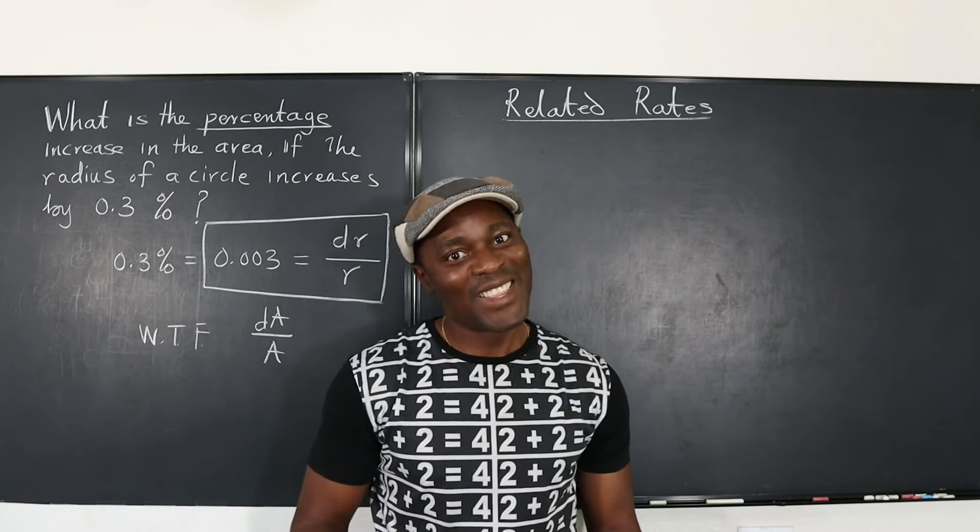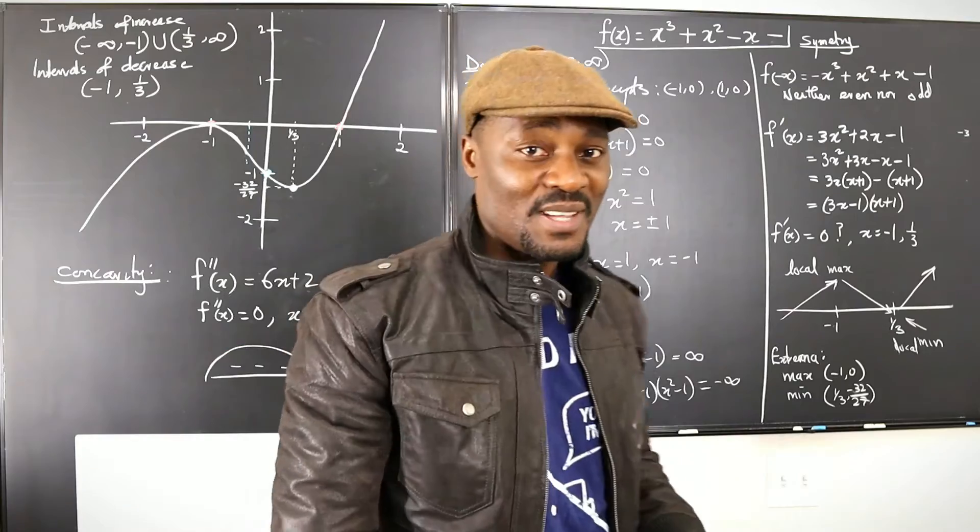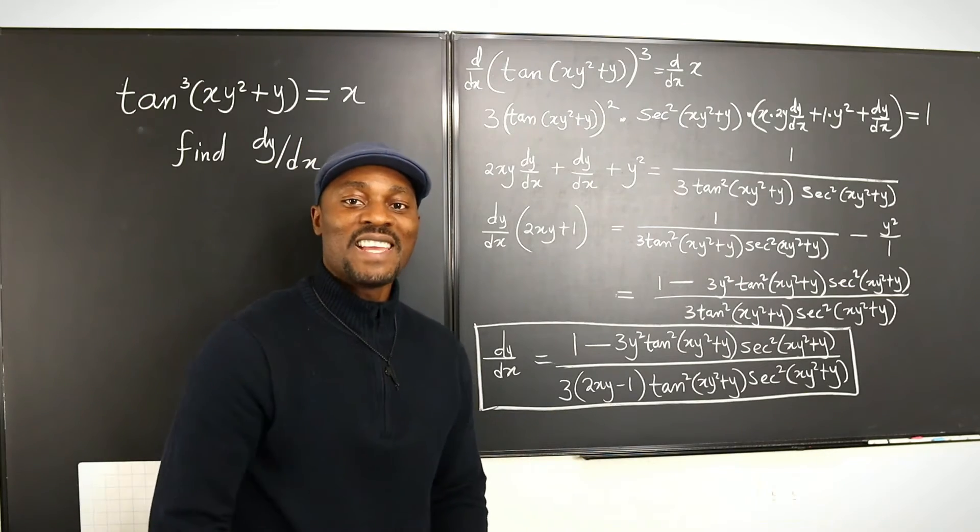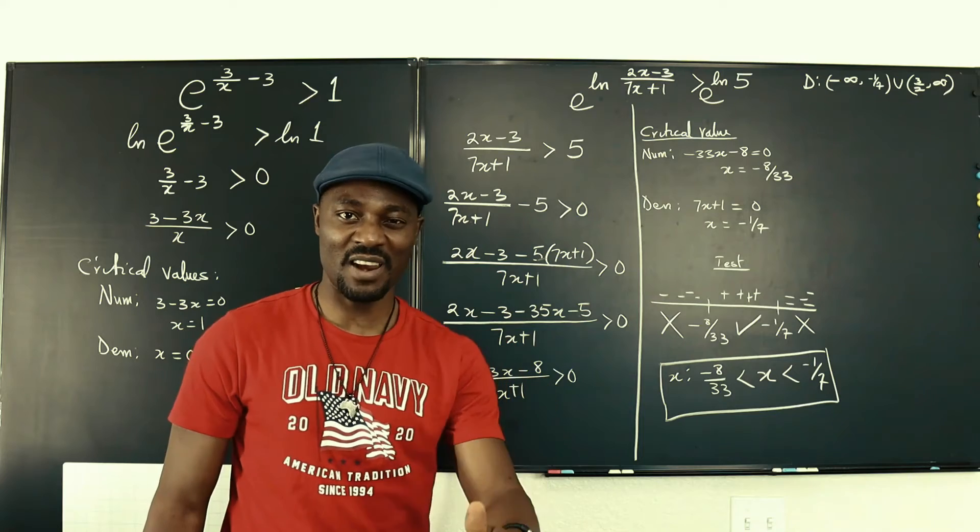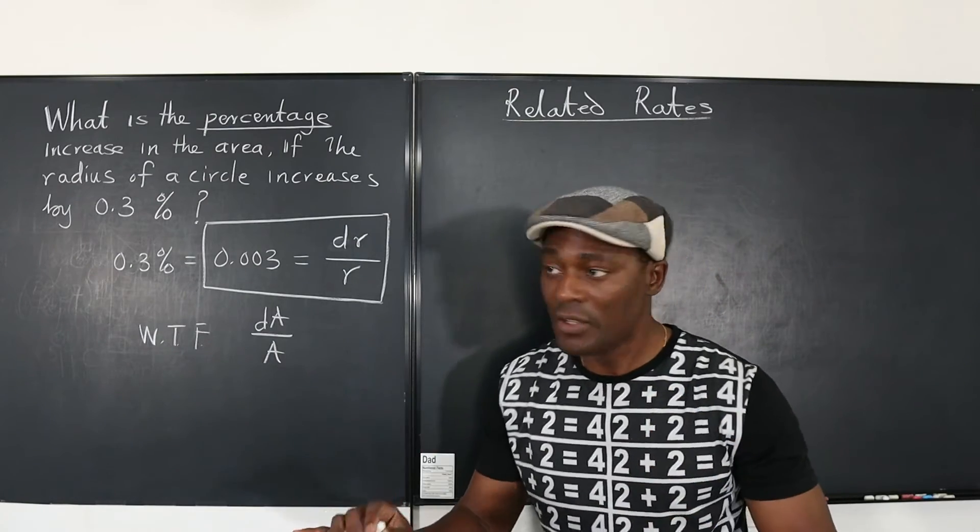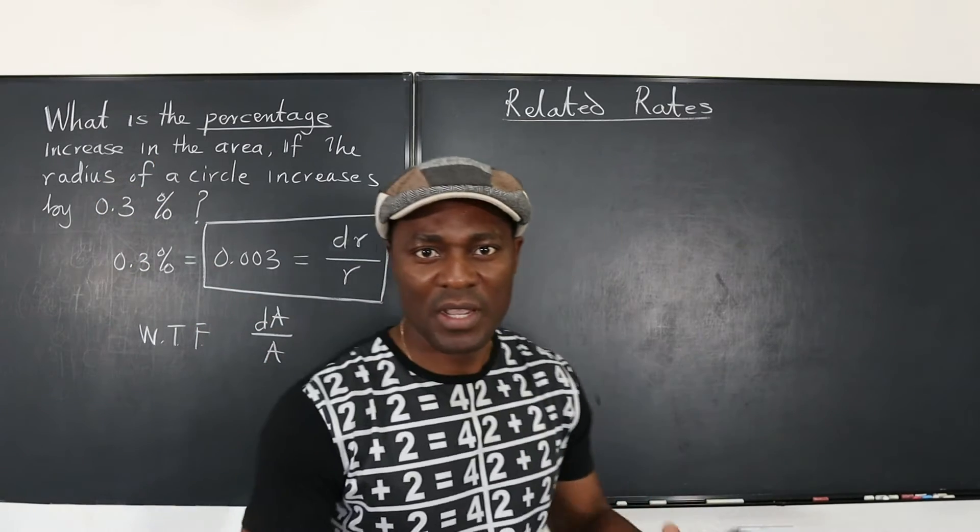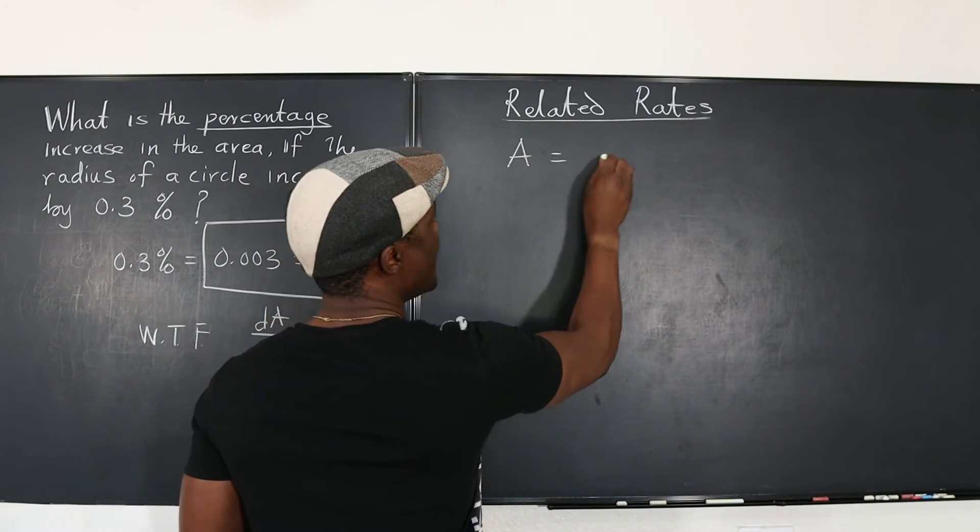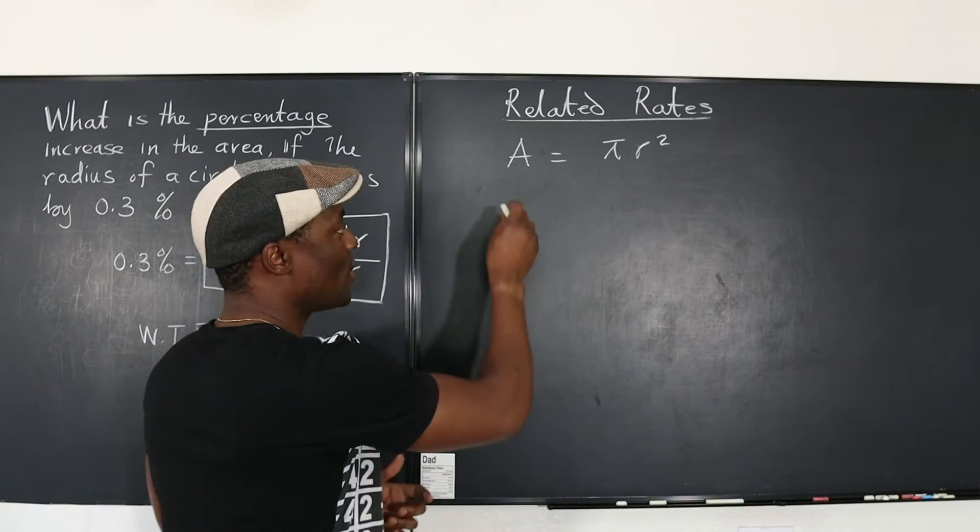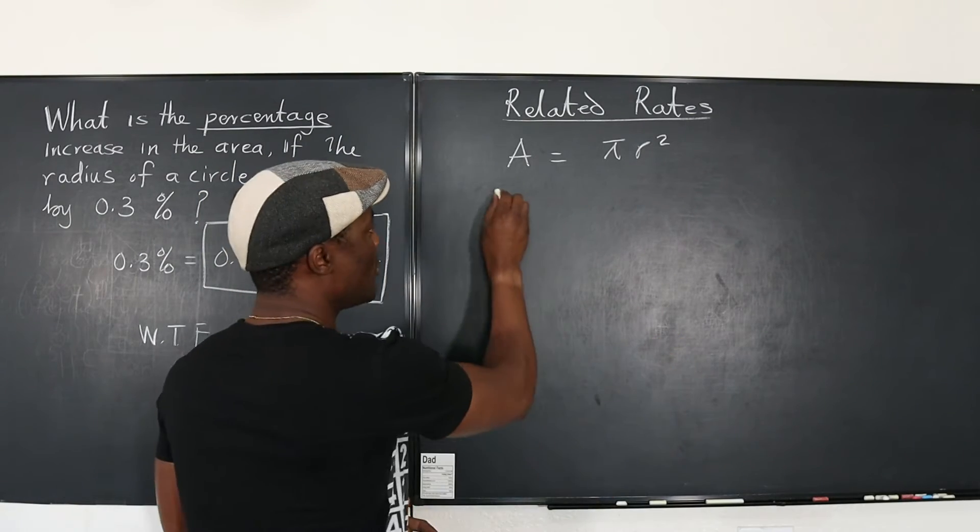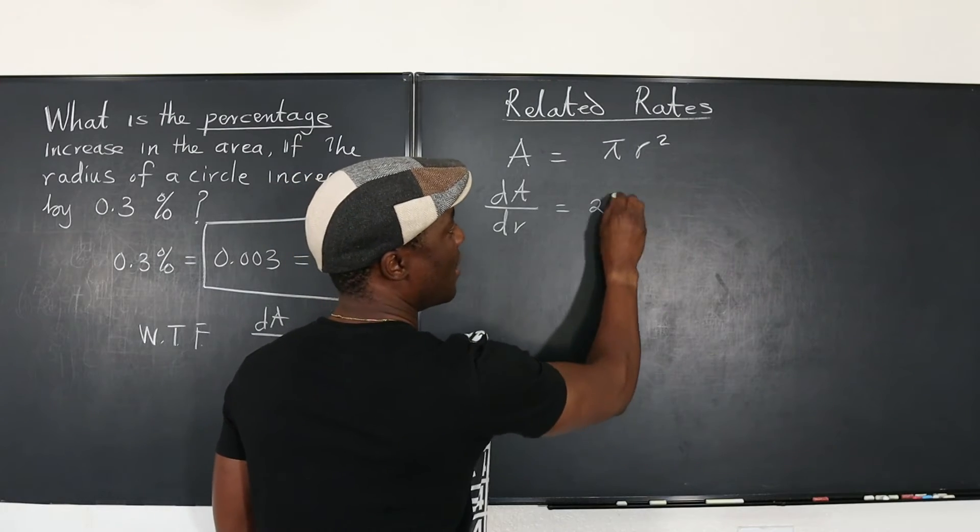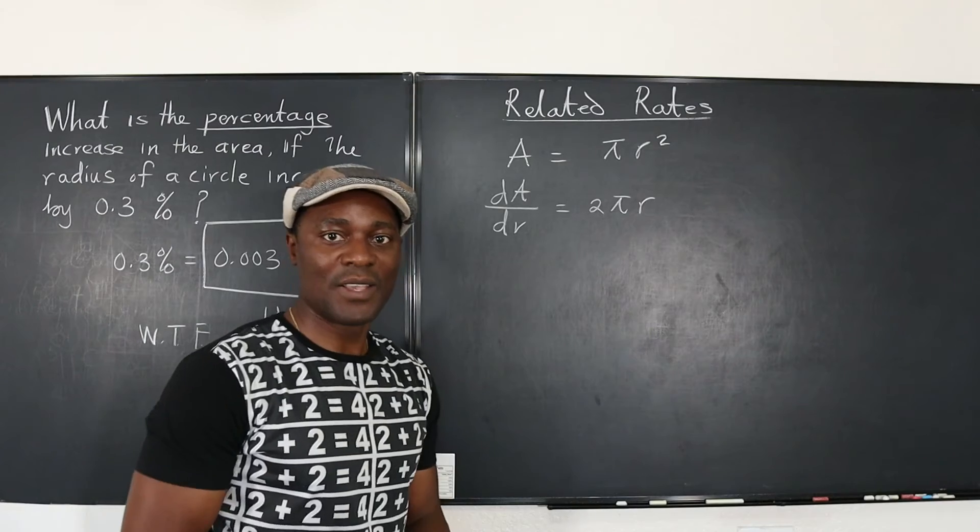Now that we've established that 0.003 is dr over r, the first thing you want to do is establish the relationship between the two things that are changing. We know the radius is changing and the area is changing. What's the connection? The formula for the area of a circle: A equals π r squared. If A changes with respect to the radius, we can take the derivative of both sides with respect to r. So dA/dr will be equal to 2π r.